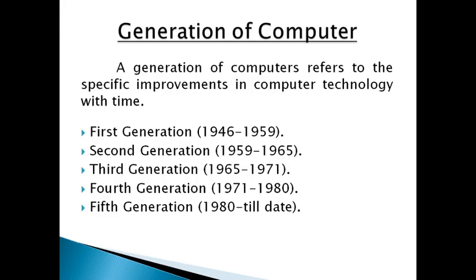A generation of computer refers to the specific improvement in computer technology. The first generation was from 1946 to 1952, second generation 1959 to 1965, third generation 1965 to 1971, fourth generation 1971 to 1987, and fifth generation from 1985 onwards. That covers the generations of computer. Thank you.